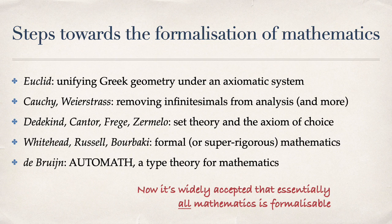Incidentally, all of these people were mathematicians, so the impetus to formalize or to be rigorous came from mathematicians themselves. Finally with De Bruyne we have the beginnings of automating mathematics on computer, and then further projects such as Mizar — that was also driven by mathematicians. We now accept that essentially all mathematics as it is done today is formalizable.